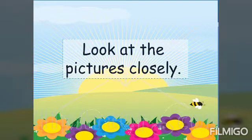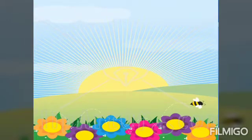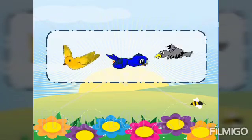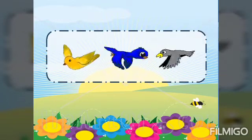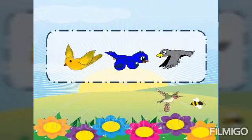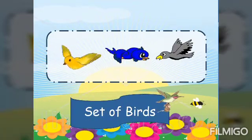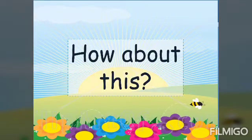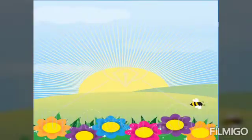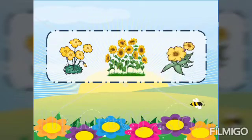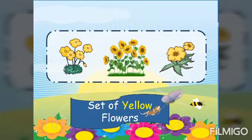Look at these pictures closely. So there are three words. What do they have in common? Set of words. How about this one? Set of yellow flowers.